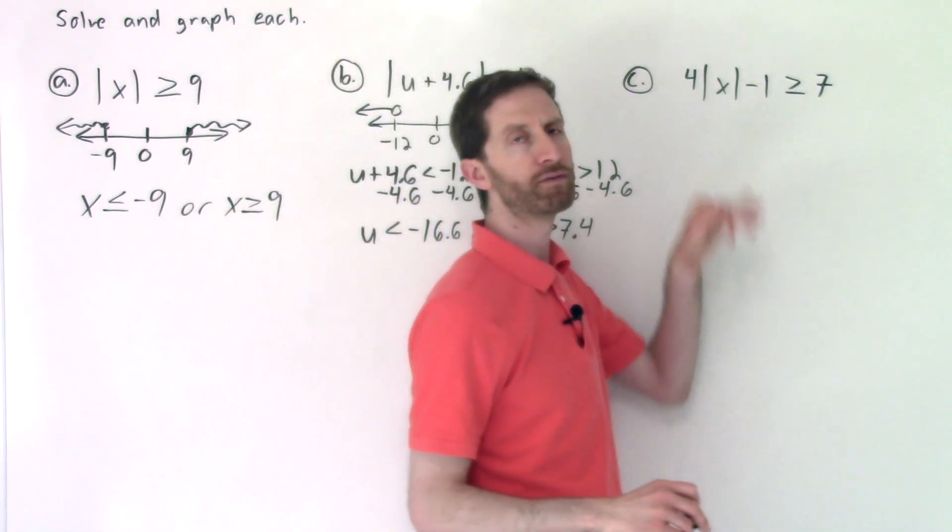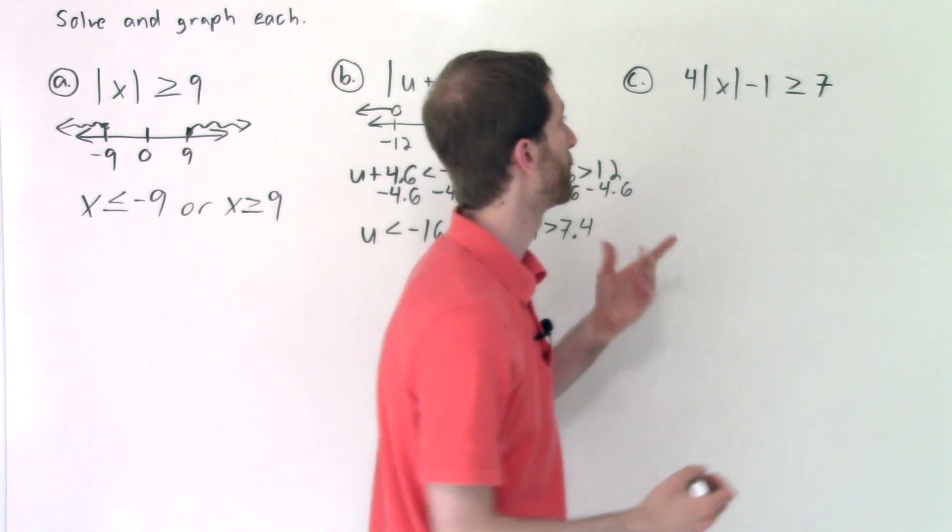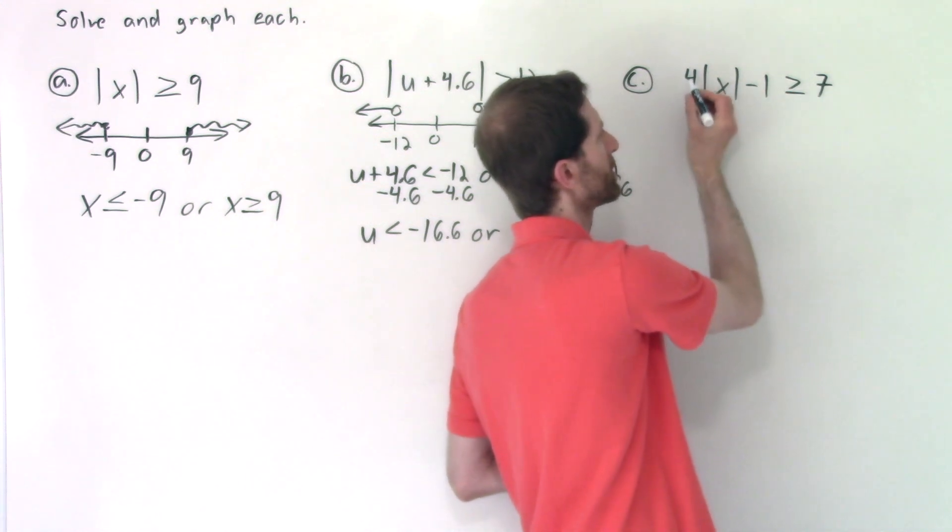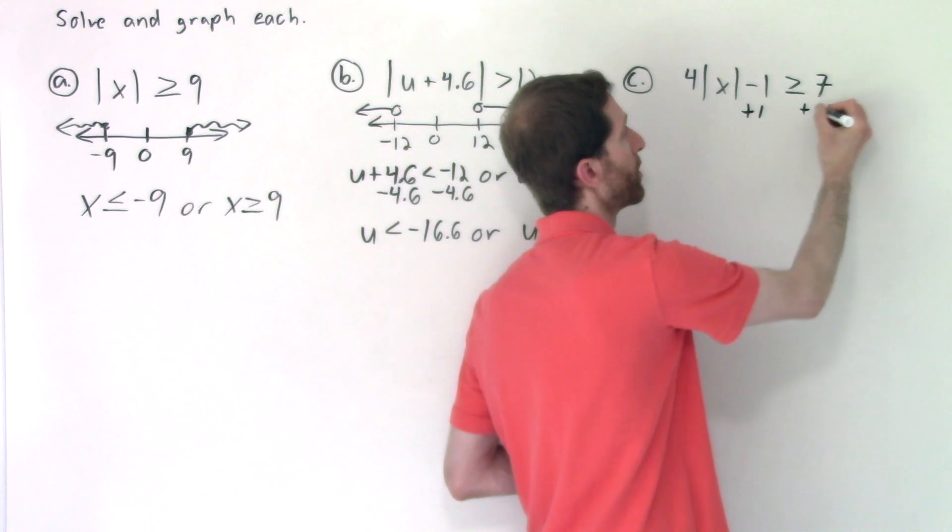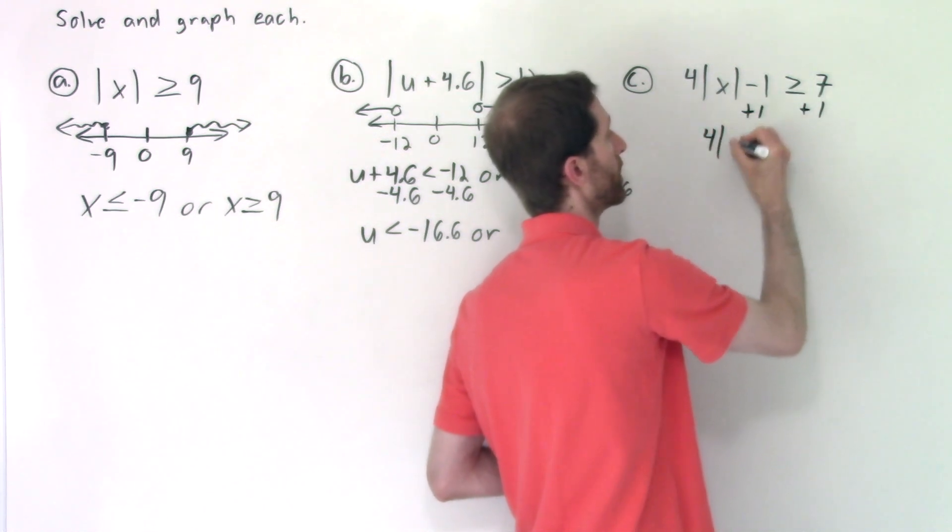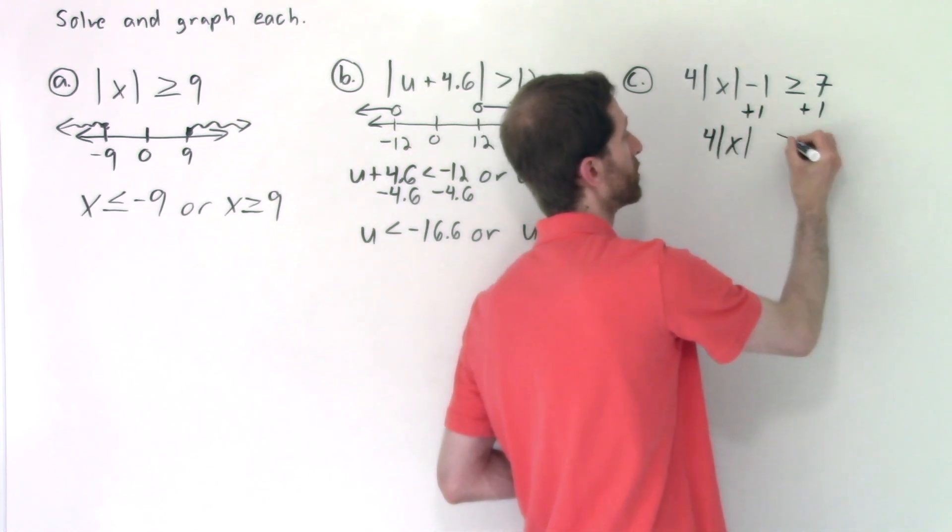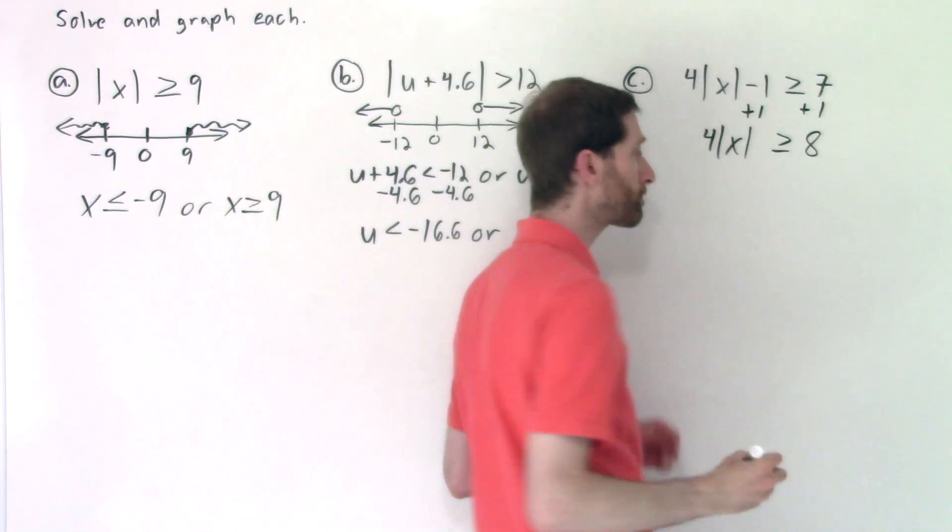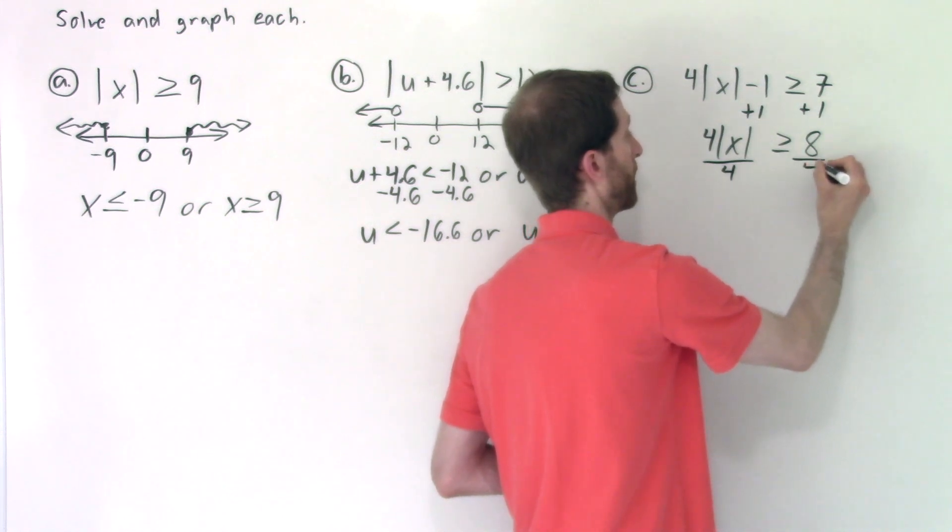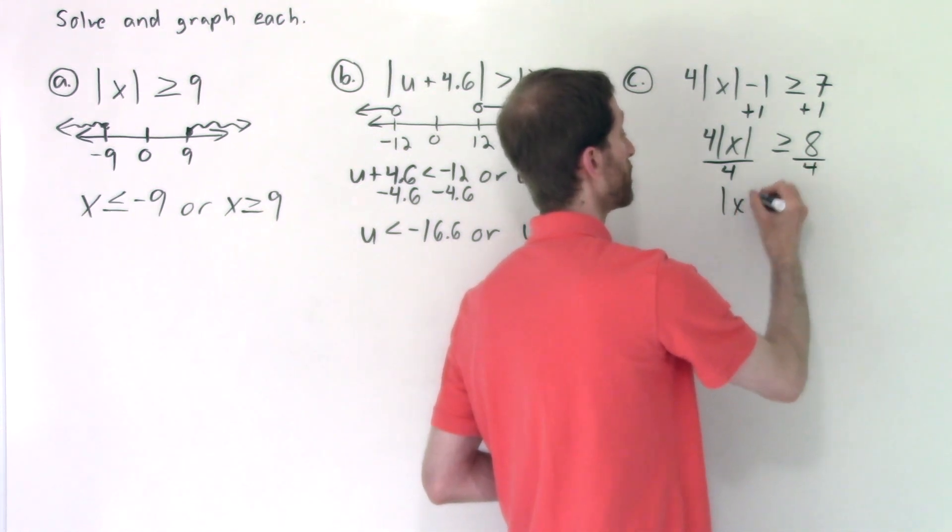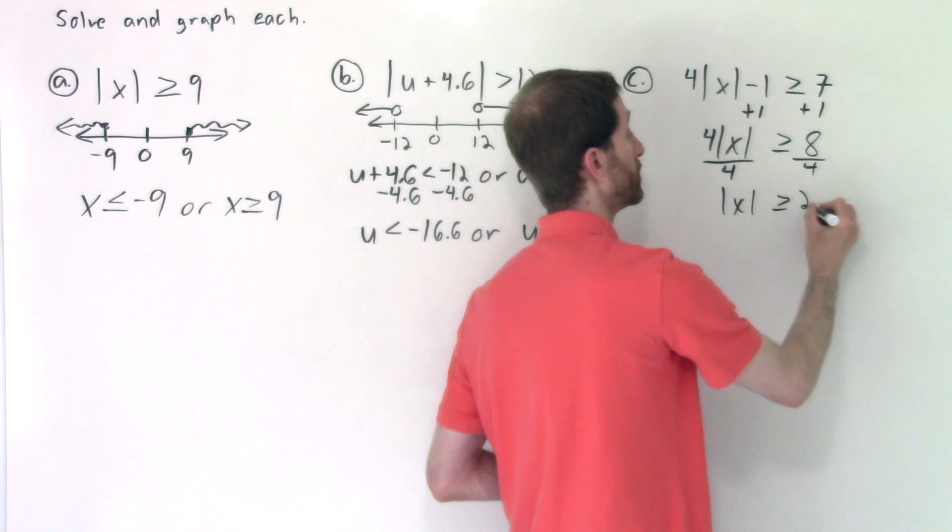So as always with absolute values, you want to isolate them. So I'm looking at this and I'm thinking it's really just like four times a variable minus one. So I'm going to add one to both sides. I'm left with four times the absolute value of X is greater than or equal to eight. Again, I want to isolate the absolute value, so I divide both sides by four. And now I'm left with the absolute value of X is greater than or equal to two.